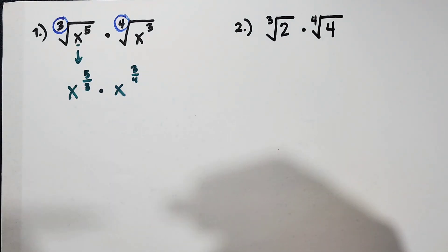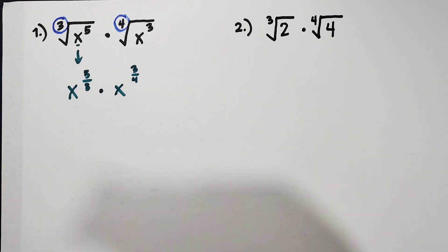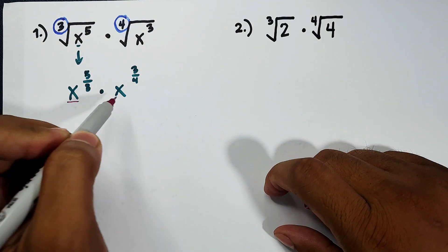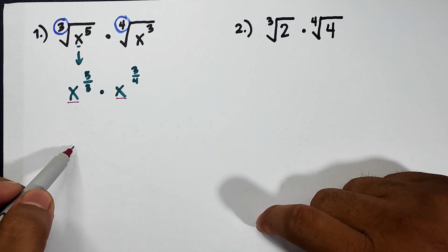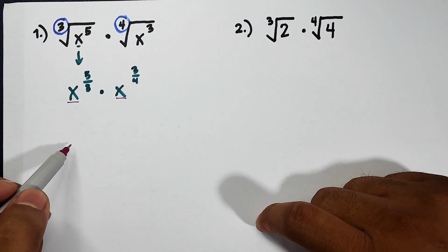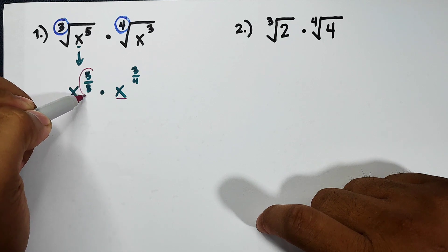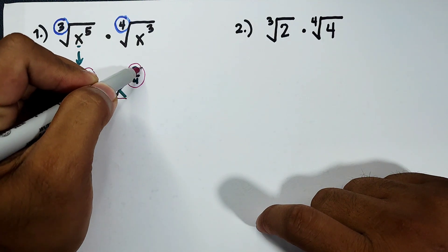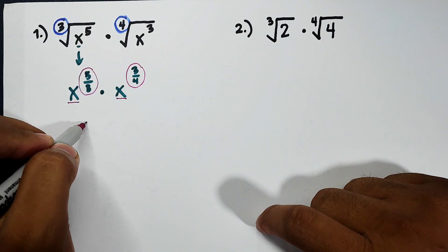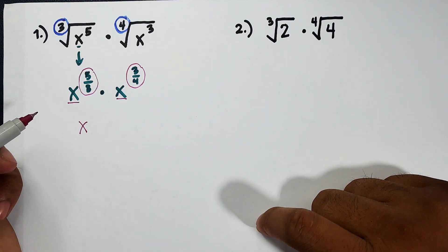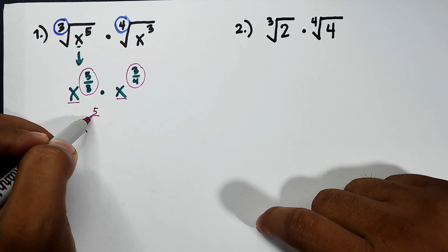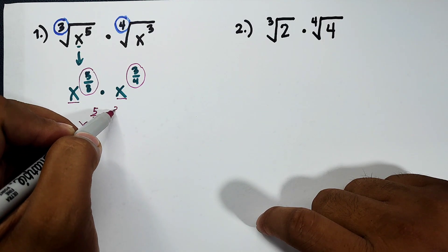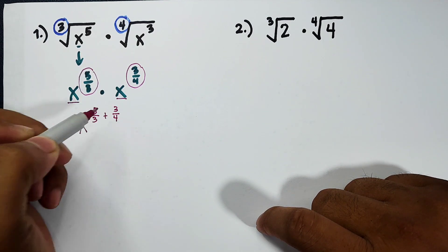Now, remember we have the laws of exponents where if the bases are the same, we can multiply them by adding the exponents. We have the same base x, so it will become x with the exponent 5 over 3 plus 3 over 4.